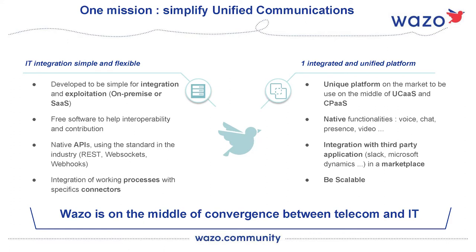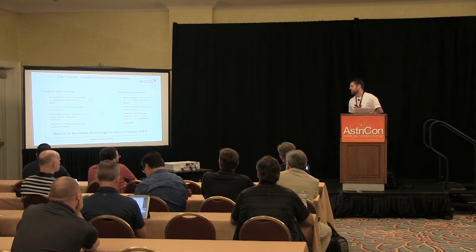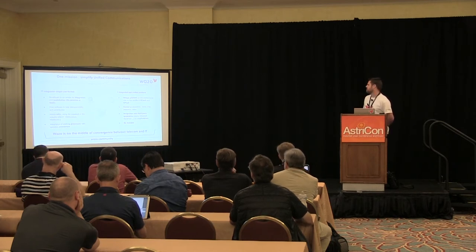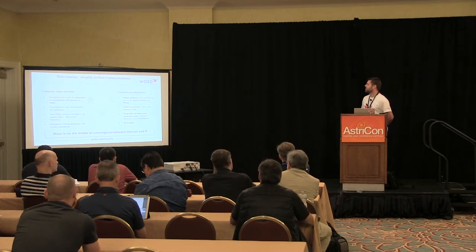It's free software, based on a GPL version 3 license. Our goal is to have a product that is API-centric and API-native. We want to simplify the process and business workflow between different applications. We have native functionality like voice, chat, presence, and video now with Asterisk 15. And we have some third-party applications we integrate to help you with simplified unified communication.